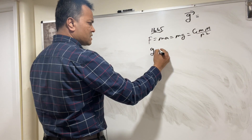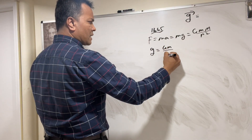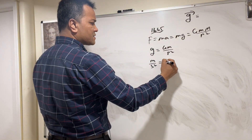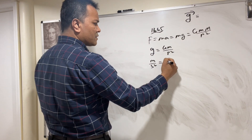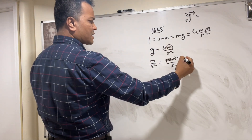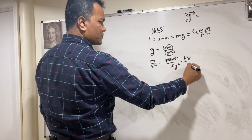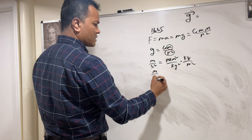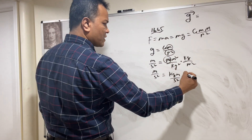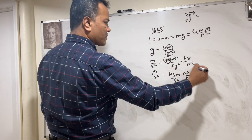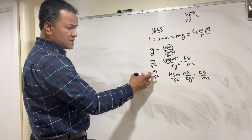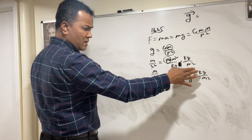Our hypothesis is g equals GM over r squared, and we're going to take it from there. So g in m/s² equals G in Newton·meter² per kilogram², times m in kilograms, divided by r² in meter squared. Newton is kilogram·meter per second squared, so after simplification we confirm the units are m/s².